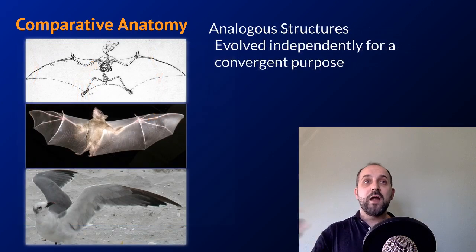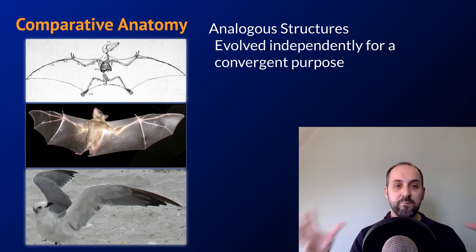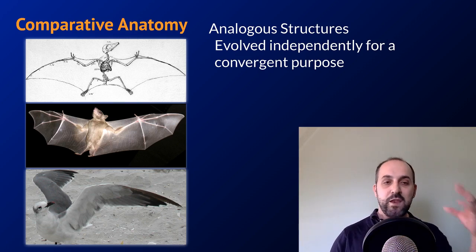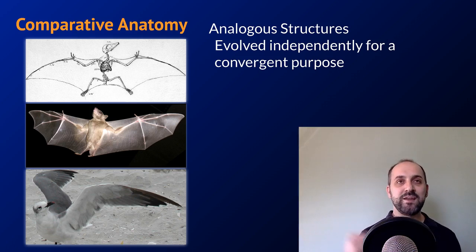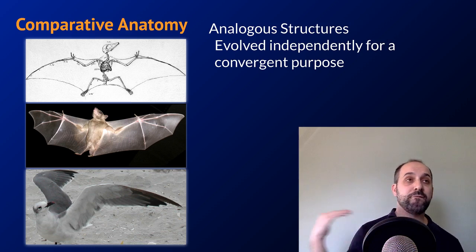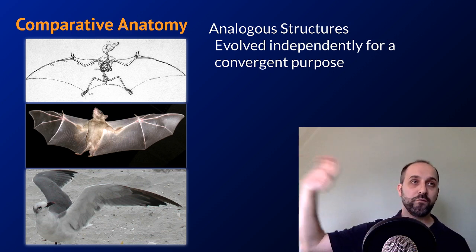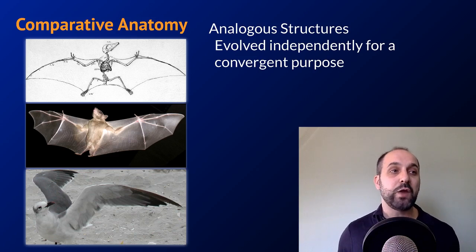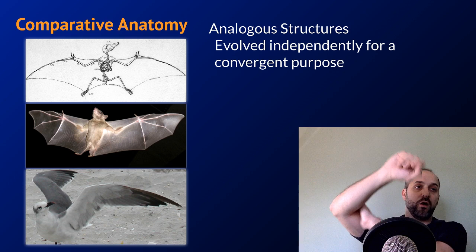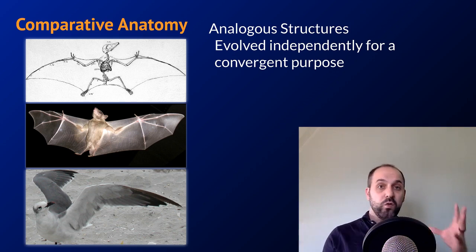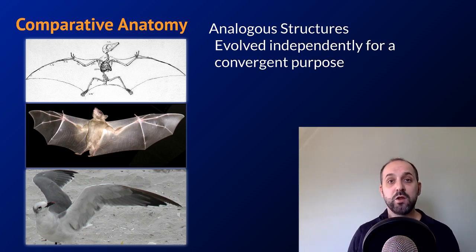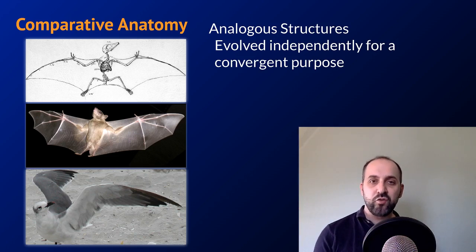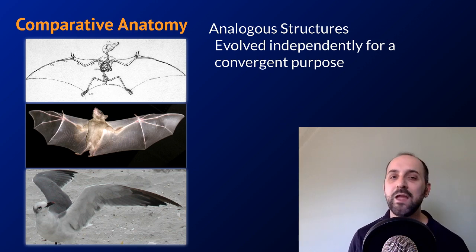Analogous structures are sort of the opposite — structures that do the same thing in different organisms but evolved independently as a function of those organisms filling similar niches. I have a pterodactyl skeleton, a bat skeleton, and a bird skeleton. The wings in each one are fundamentally different in structure. In a pterodactyl, it's hung off the arm and the foot. In bats, it's hung off the fingers and the foot. In birds, it's really just hung off the arm. That's an analogous structure — totally different underlying structure, but all help these organisms fly because they all evolved to fill similar niches.